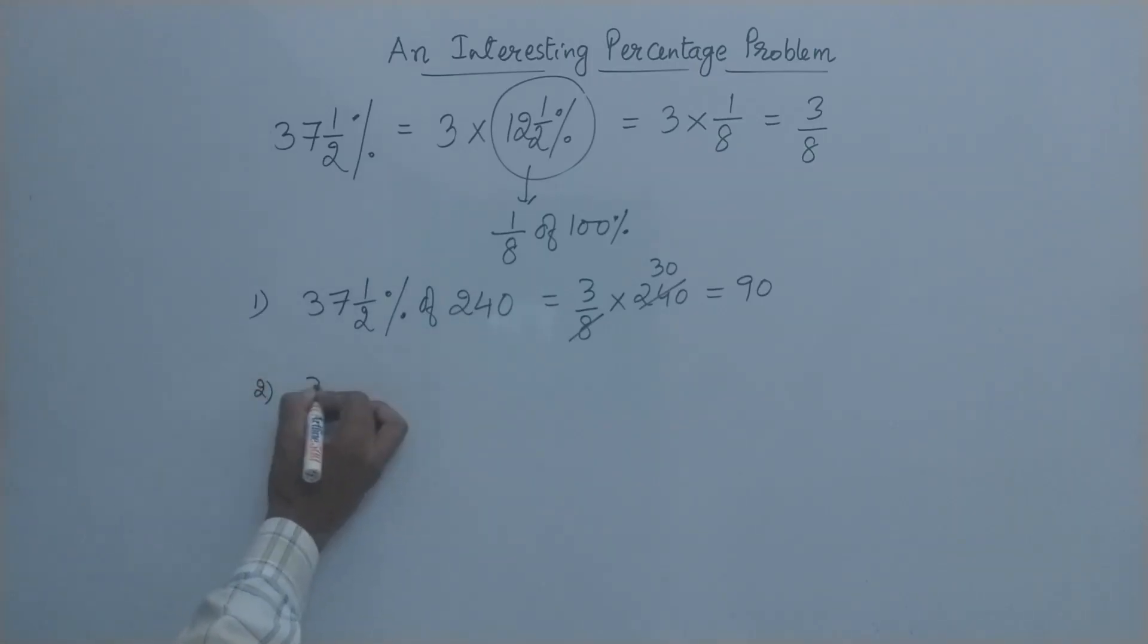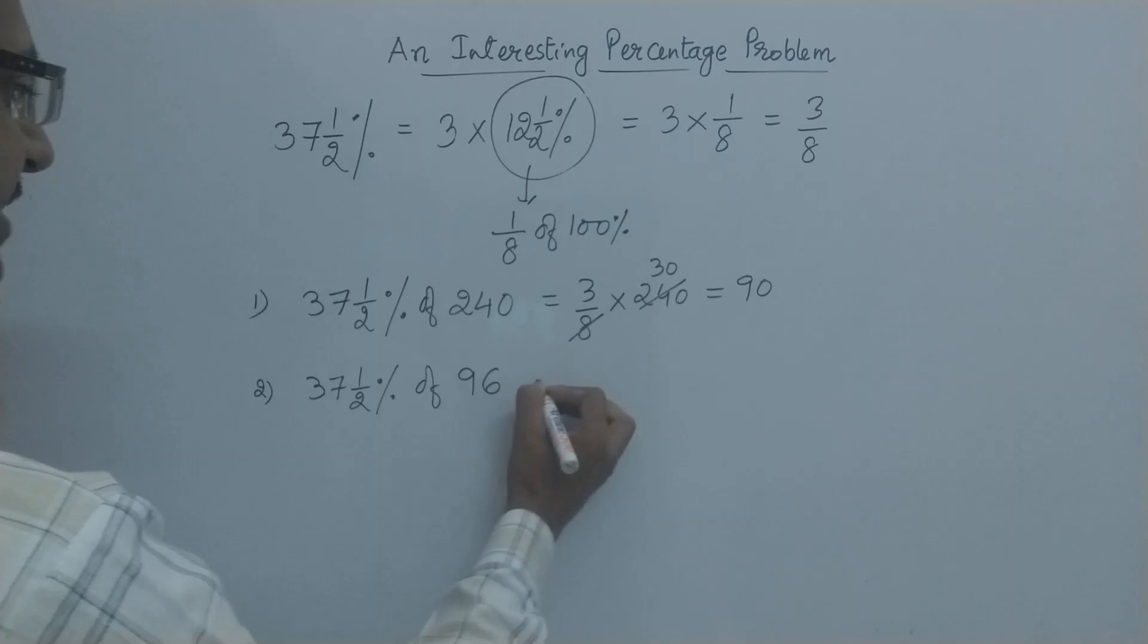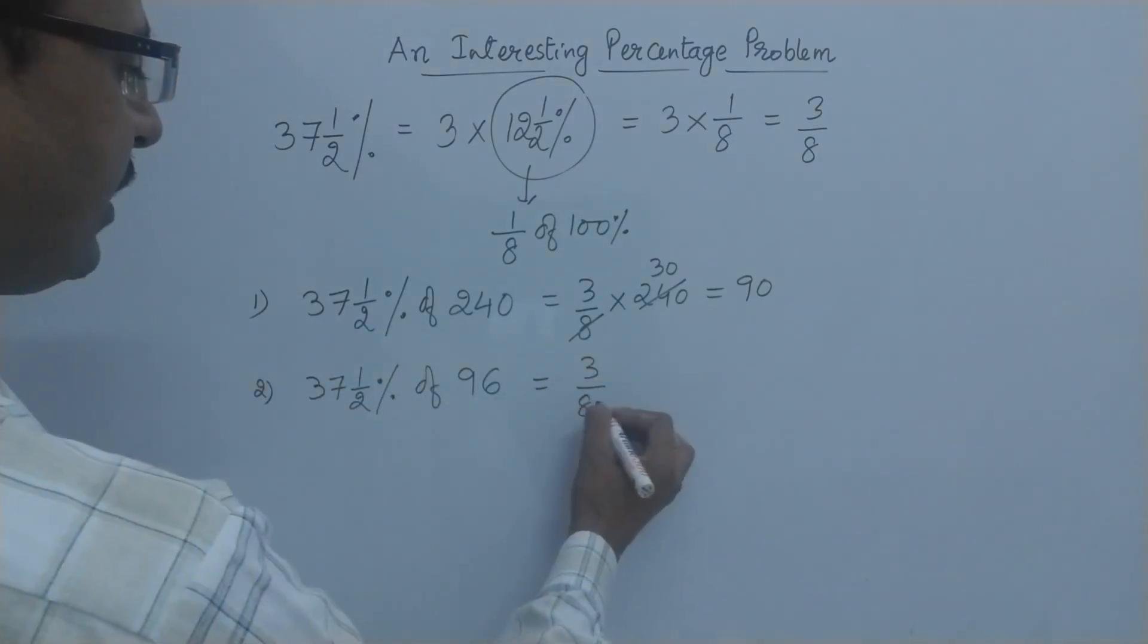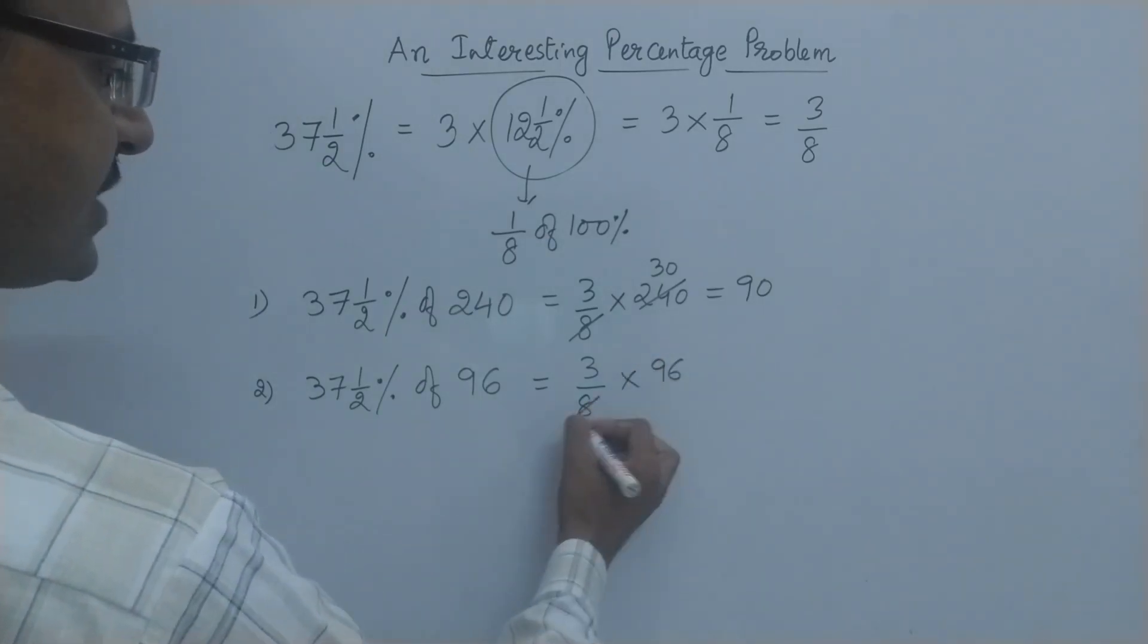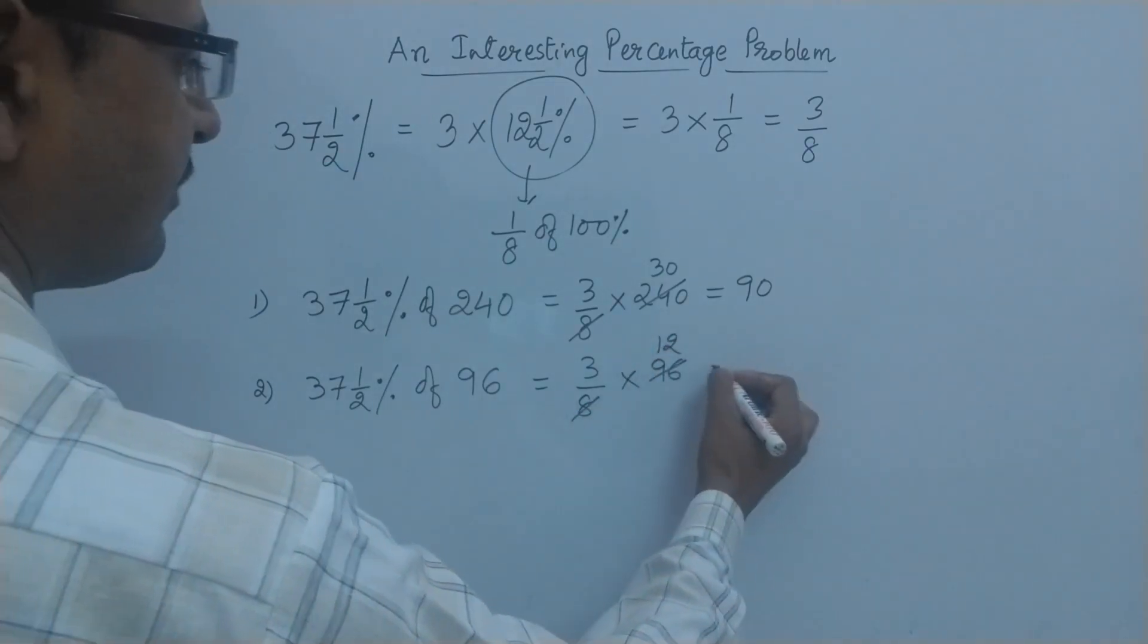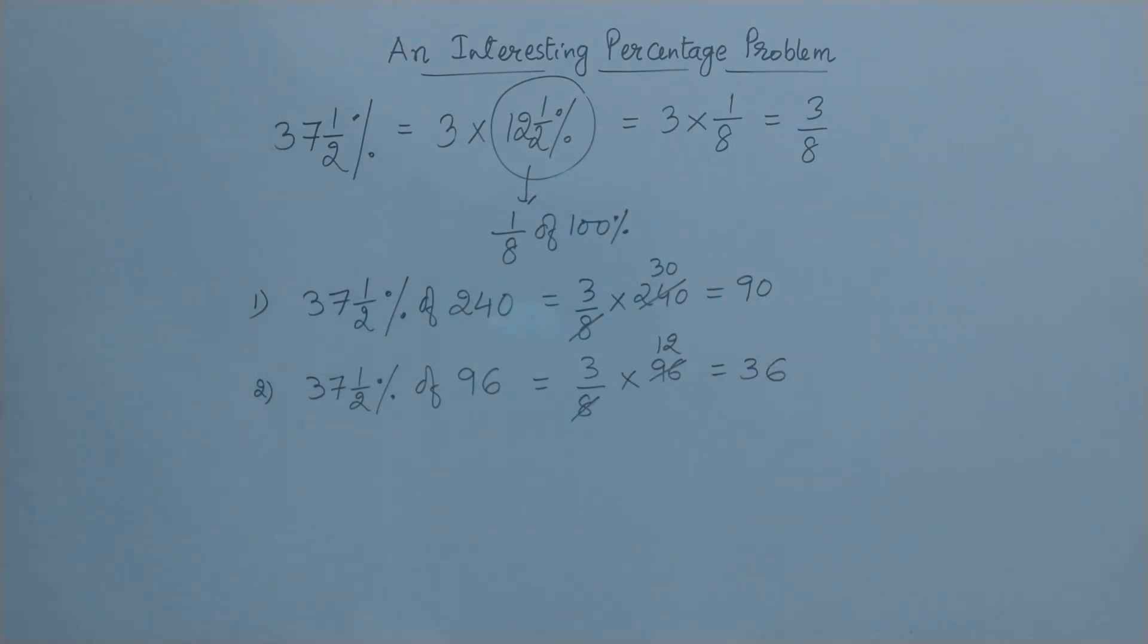Let's take one more example. Suppose you need to find 37.5% of another number. Let's see, the number is 96. 37.5% is basically 3/8 and multiplied by 96, and as you can see, 8 goes exactly 12 times, giving you the answer 36. So this is one kind of problem you can solve very easily if you know the concept of percentages like 37.5%. Let's see another problem.